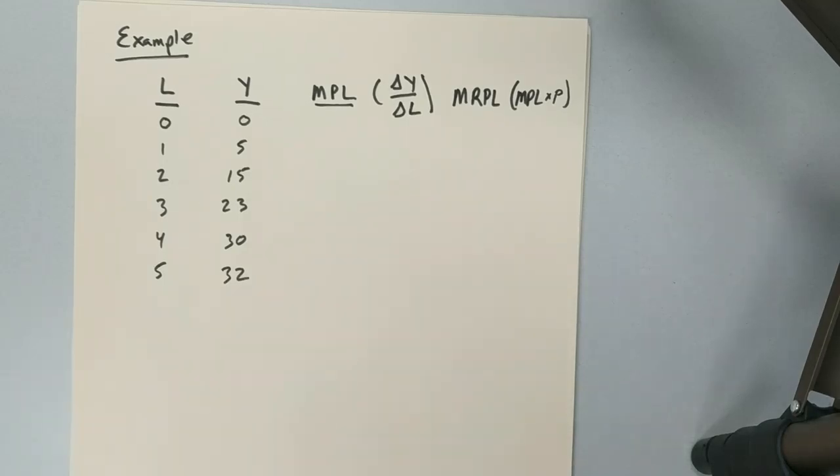Now, these numbers I did not get from an equation, although a lot of times in class, you will have a production function that will relate these two things. All I did here is make sure that I see some sort of diminishing marginal returns to my labor.